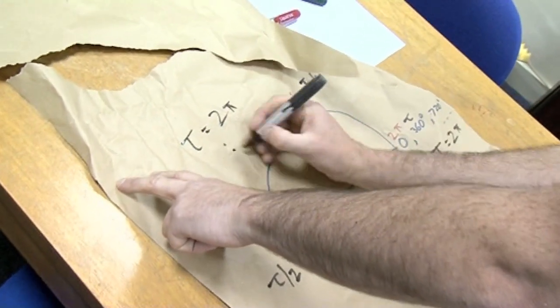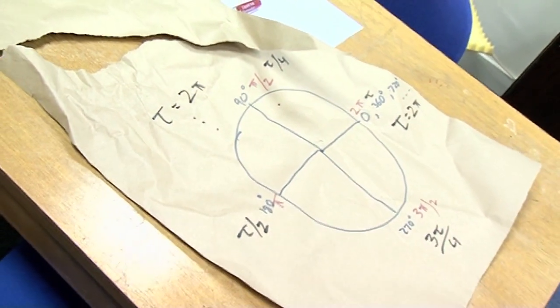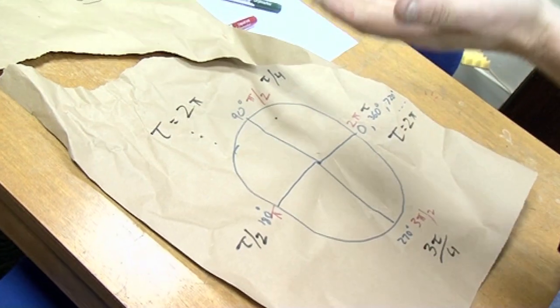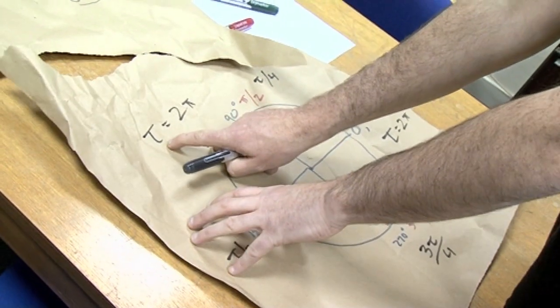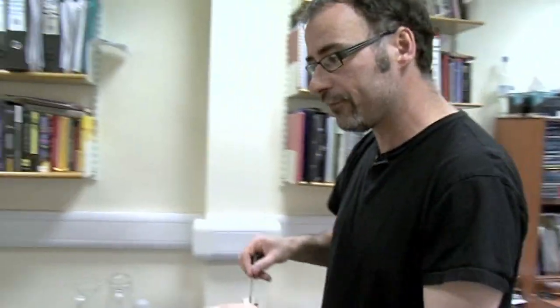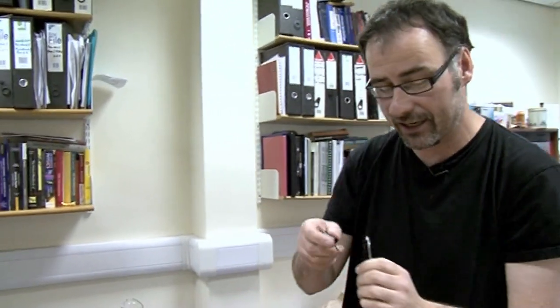Any professional physicist or mathematician is going to say, well, it's straightforward — I just write tau and continue my derivation. But that's not the point. It's not about the professional physicist. It's about teaching this stuff. 2π appears throughout physics, all the way from the very large scale right down to quantum mechanics.